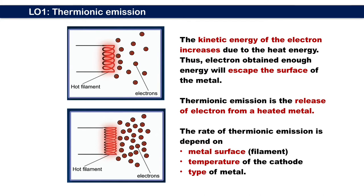The kinetic energy of the electron increases due to the heat energy, thus electrons obtain enough energy to escape from the surface of the metal. In other words, thermionic emission is the release of electrons from a heated metal. The rate of thermionic emission is dependent on factors like metal surface, temperature of the cathode, and type of metal.